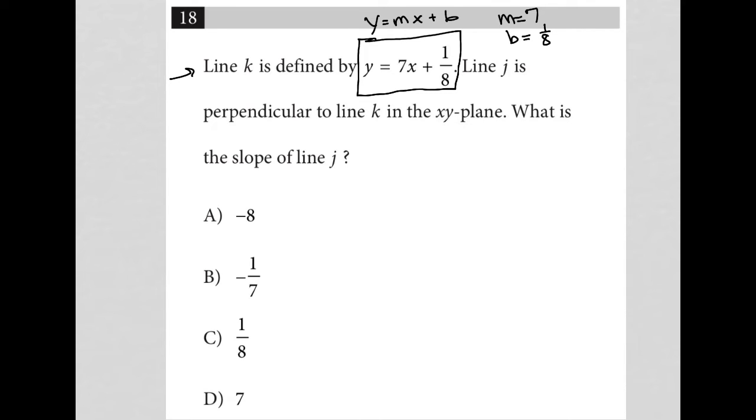The next sentence says line J is perpendicular to line K. So what does that mean? When we have two lines that are perpendicular to each other, their slopes are opposite reciprocals—opposite sign and reciprocal.